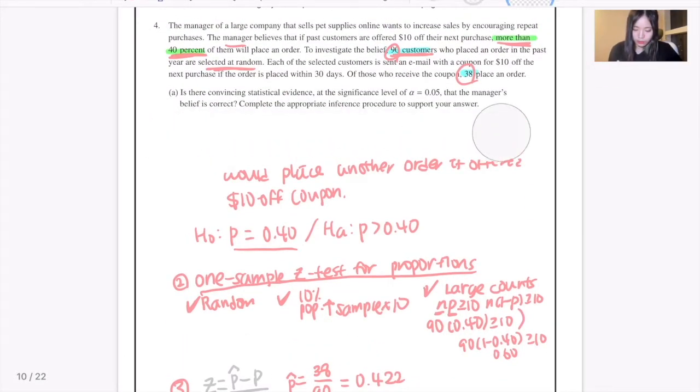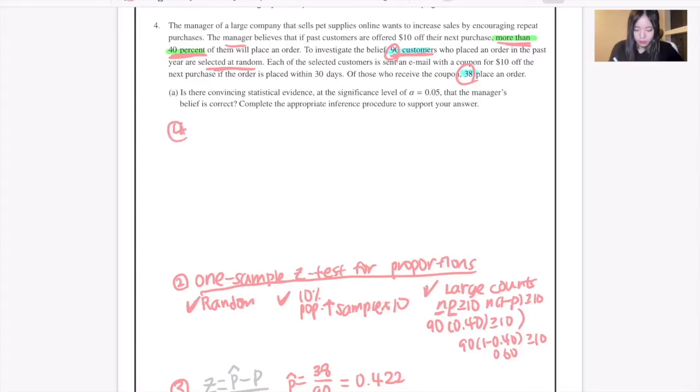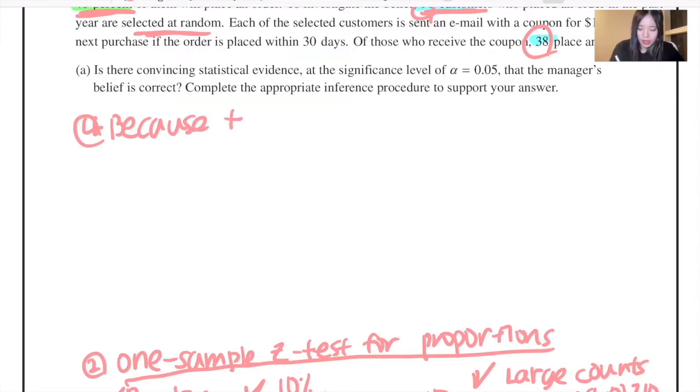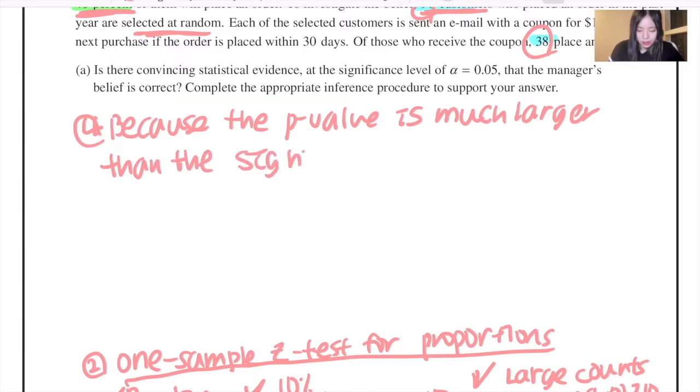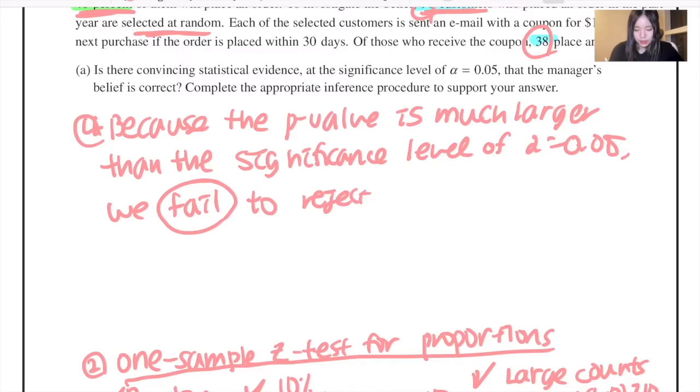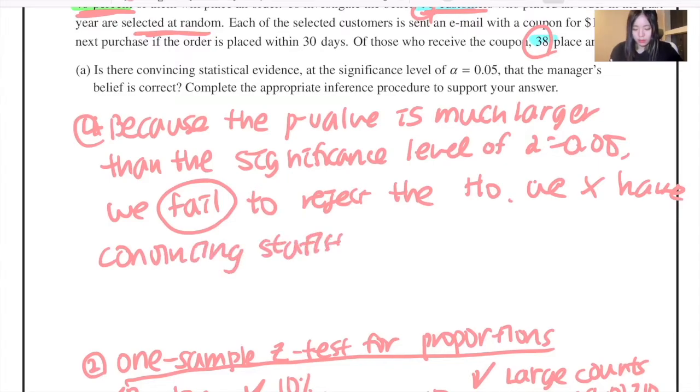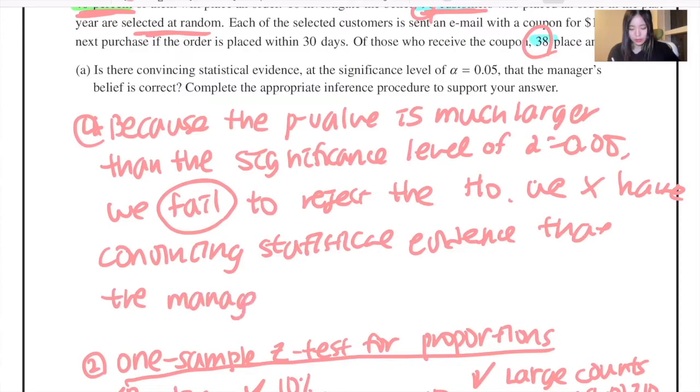For concluding, you can say that because the p-value is much larger or bigger than the significance level of alpha equals 0.05, we fail to reject the hypothesis. In other words, we do not have convincing statistical evidence that the manager's belief is true.